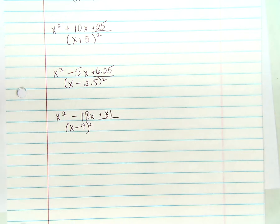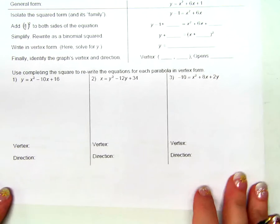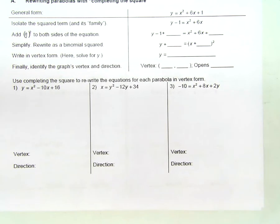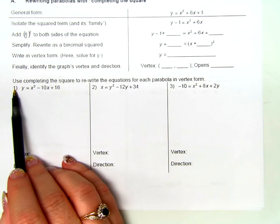x plus 5 squared. So what about this one? x minus 2.5 squared. And what about the last one? x minus 9 squared. Good. Feeling fairly comfortable with that?